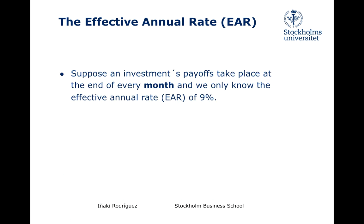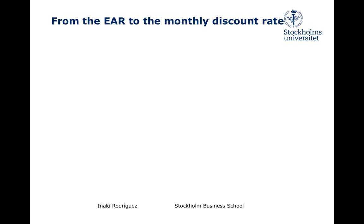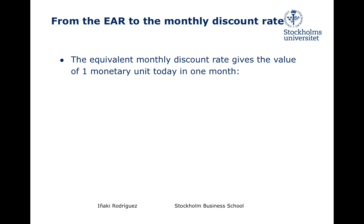Now, what if the problem presents us with a project whose payoffs take place at the end of each month instead? How do we obtain the equivalent monthly discount rate? That is, how do we turn the Effective Annual Rate into its equivalent monthly discount rate? Once again, the way to think about this is to realize that we can also use the monthly discount rate to move money across time over periods of one year. Since we should get the same result regardless of what rate we use, this gives us an equality that we can then exploit to factor out the equivalent monthly discount rate. Specifically, the discount rate that applies over a period of one month can be used to find the value of one monetary unit today one month from now by simply doing this multiplication, where R_month denotes the equivalent monthly discount rate.